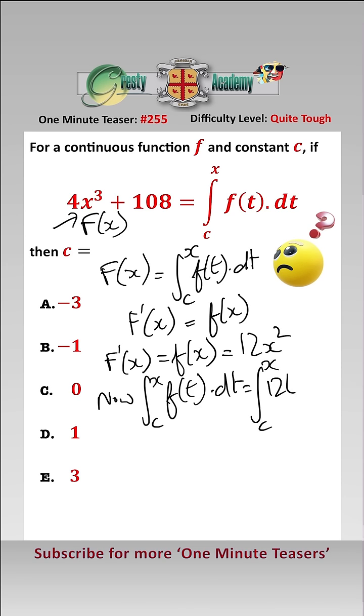and that equals 4t cubed between c and x, which equals 4x cubed minus 4c cubed.